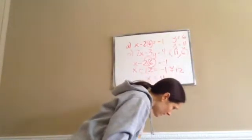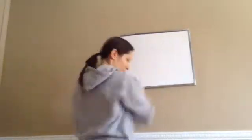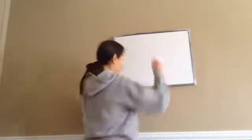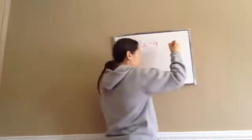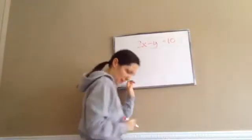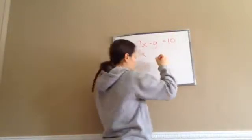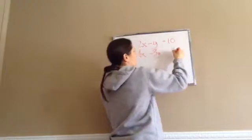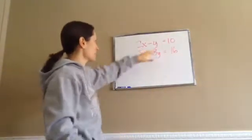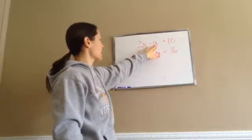Let's do a few more to make sure you're getting it. Work this one on your paper. Problem: 2x minus y equals 10, and 4x minus 3y equals 16. Looking at this, I'm going to choose y because it's by itself — it's the easiest to isolate.